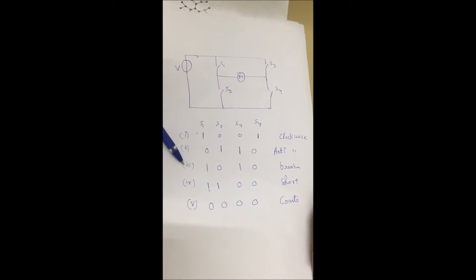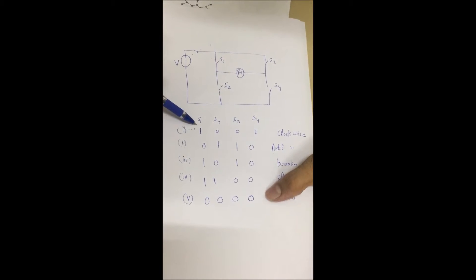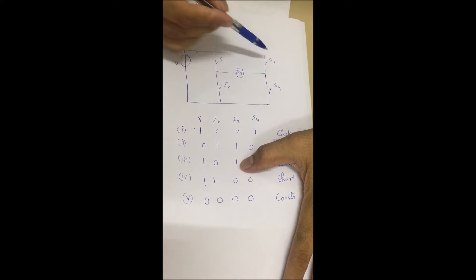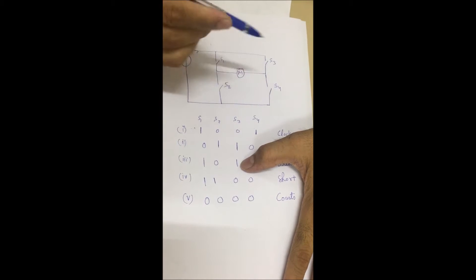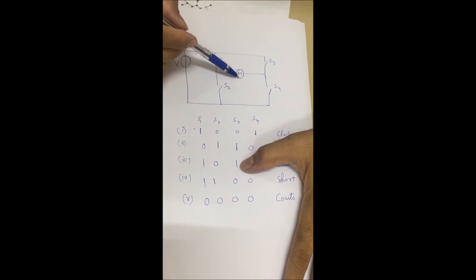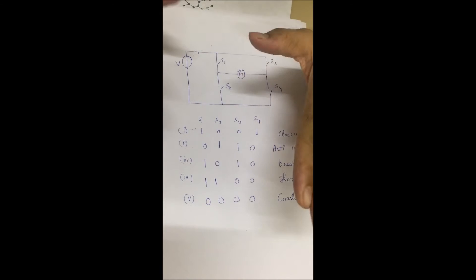The third case is when switch S1 and S3 are closed, or when switch S2 and S4 are closed. So what happens? The voltage drop here will be the same. So motor does not move. It remains in stop condition.